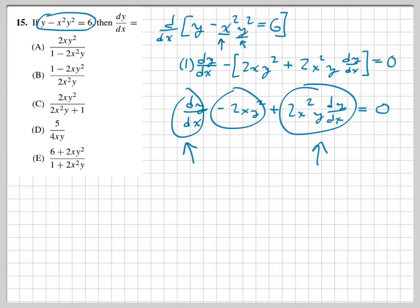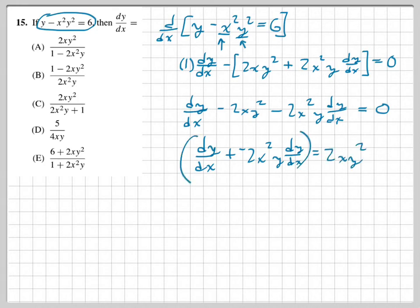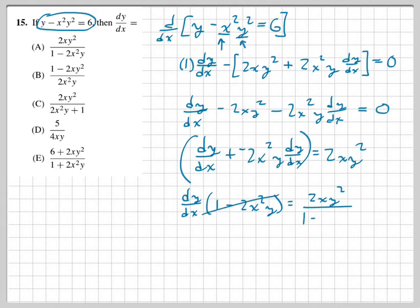We move one dy/dx term to the other side to factor. But wait — we didn't distribute the negative to both terms. Correcting that: dy/dx minus 2x²y times dy/dx equals 2xy². Factoring out dy/dx gives dy/dx times the quantity 1 minus 2x²y equals 2xy². Dividing both sides gives dy/dx equals 2xy² over 1 minus 2x²y.